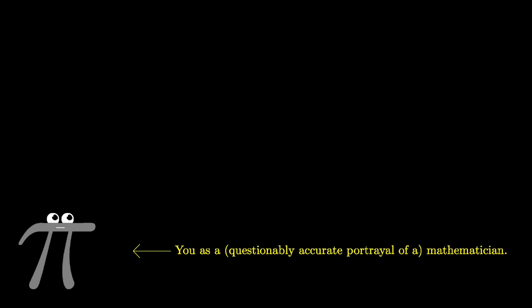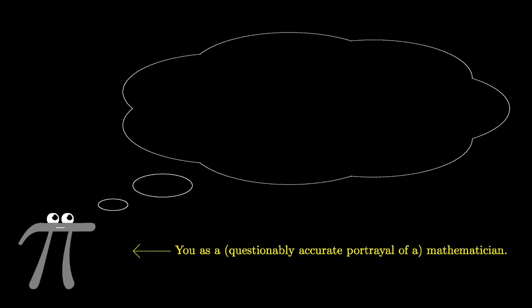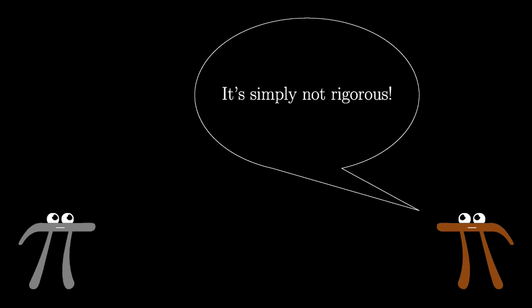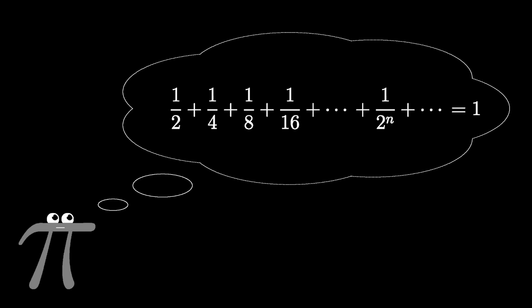Imagine that you are an early mathematician in the process of discovering that 1 half plus 1 fourth plus 1 eighth plus 1 sixteenth on and on up to infinity, whatever that means, equals 1, and imagine that you needed to define what it means to add infinitely many things for your friends to take you seriously. What would that feel like? Frankly, I have no idea, and I imagine that more than anything, it feels like being wrong or stuck most of the time.